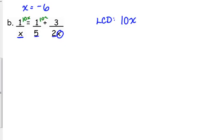Let's multiply each expression by 10x. So, for the first one, the x's cancel, so we have 1 times 10. The second one, 10 over 5 is 2, so we have 1 times 2x. Don't forget your plus sign right here. And 10 over 2 is 5, and the x's cancel, so we've got plus 3 times 5.